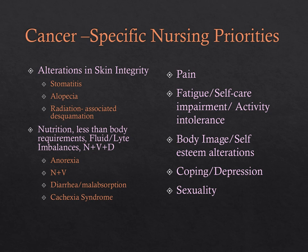Nursing care priorities for the client with cancer include preventing complications, managing pain, fatigue, self-care, activity tolerance, coping, depression, and nutrition. Cancer can literally affect everything, which is why this is such a difficult content area.